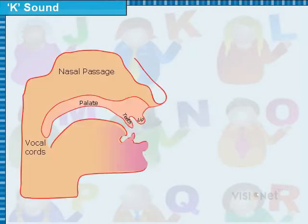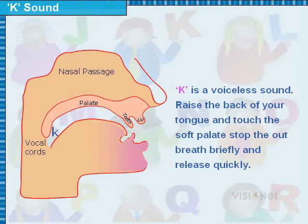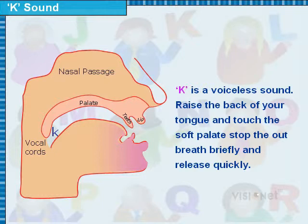How to make the K sound? Raise the back of your tongue and touch the soft palate. Stop the out breath briefly and release quickly. K is a voiceless sound.